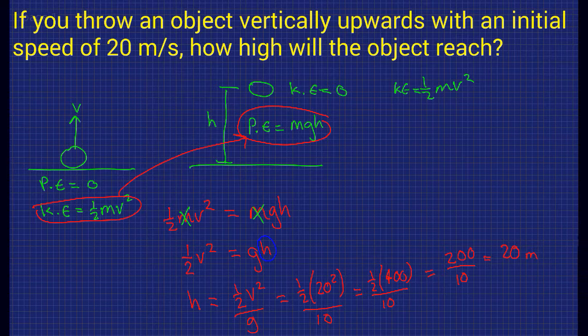So this is how we calculate the height that our object reaches when we release it from a speed of 20 meters per second.